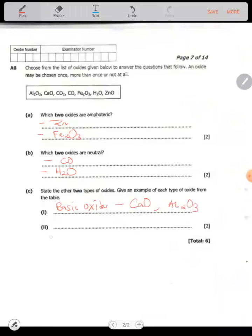The other type of oxide is acidic oxide. Acidic oxides are oxides of non-metals. They have acidic properties.